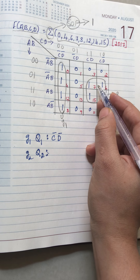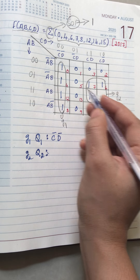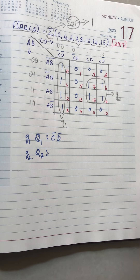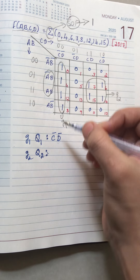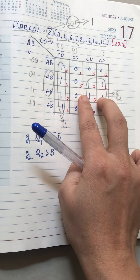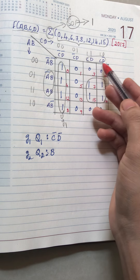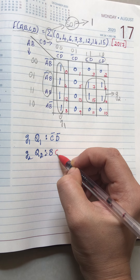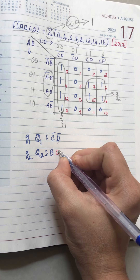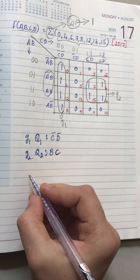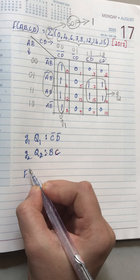Go with the second group — this is also a quad, so q2. For these ones, look at the rows — the common row term is b, so write b. Next go with the columns — in these two columns the common term is c, so enter c. The expression for q2 is b c.